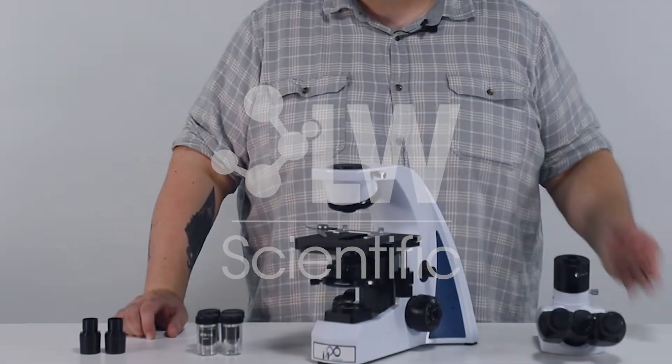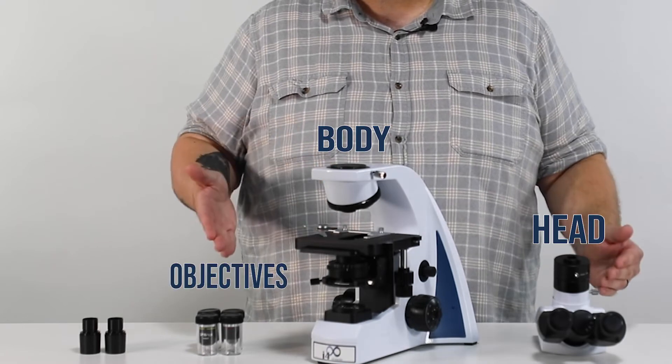There are four main parts to assemble on your microscope: the head, the body, the objectives, and the eyepieces.